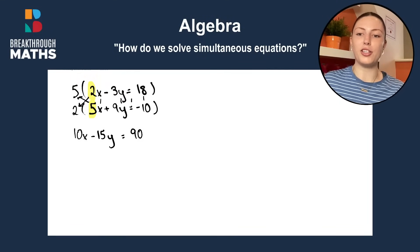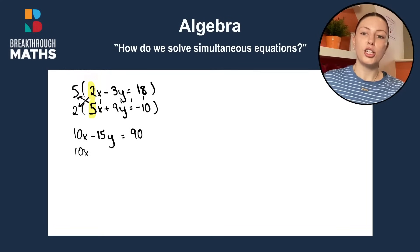On to the next equation. 2 times 5 is 10x. 2 times 9 is plus 18y. Then we have 2 times minus 10 gives us minus 20.